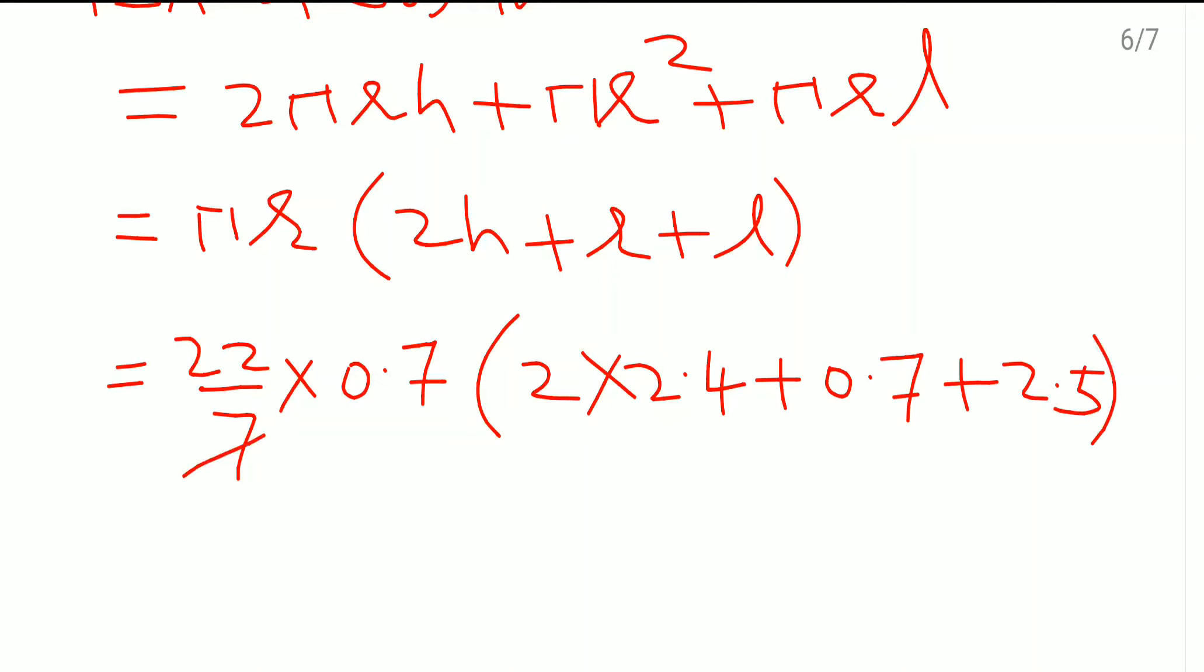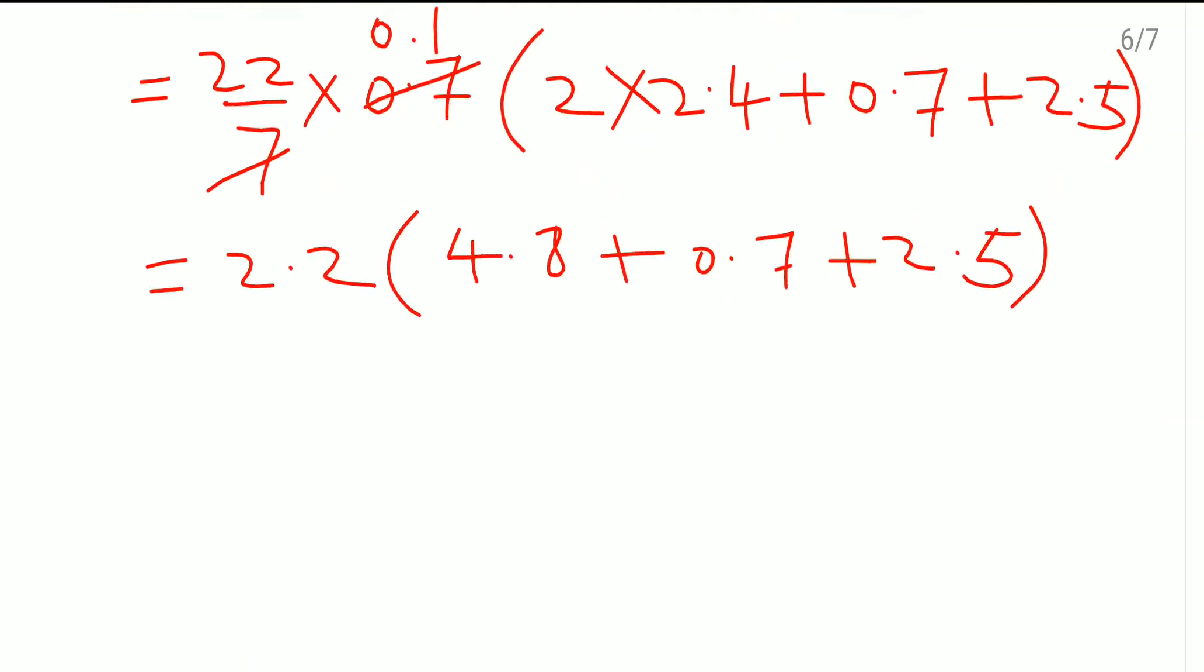Now this 7 and 7 got cancelled, but one decimal place, so 0.1 × 22, it will become 2.2. In the bracket, 4.8 + 0.7 + 2.5. We will do the addition of this one here.